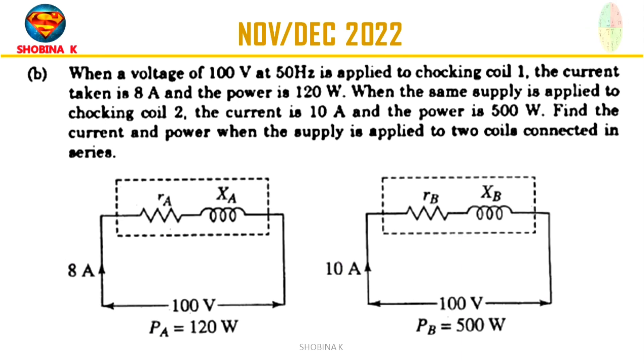Now look at the sum. When a voltage of 100V at 50Hz is applied to choking coil A, the current taken is 8A and the power is 120W. When the same supply is applied to coil B, the current is 10A and the power is 500W. Now what current and power will be taken when 100V is applied to the two coils connected in series?